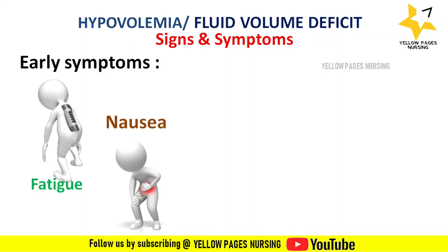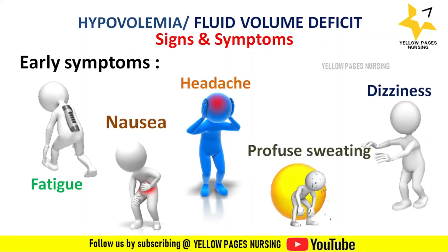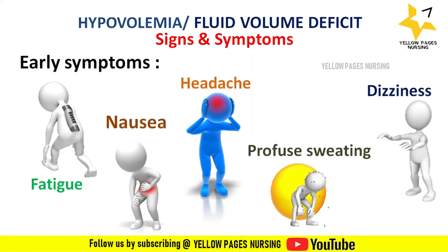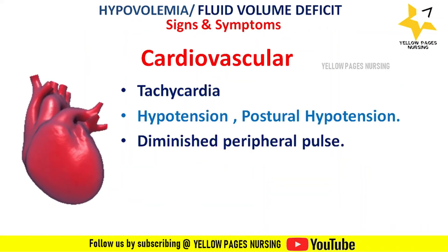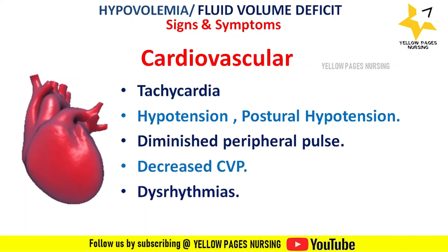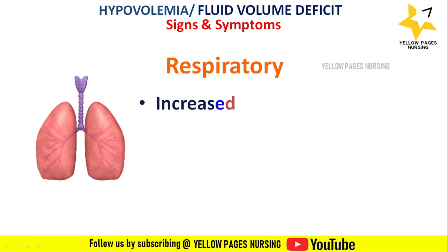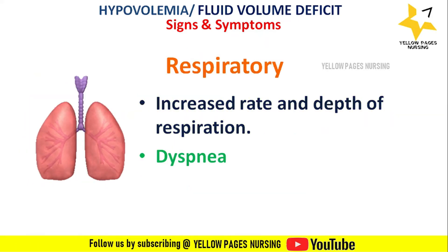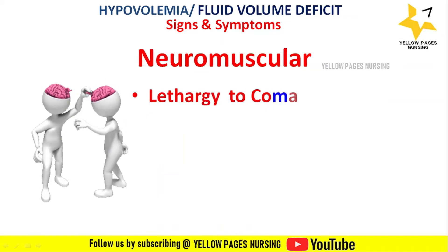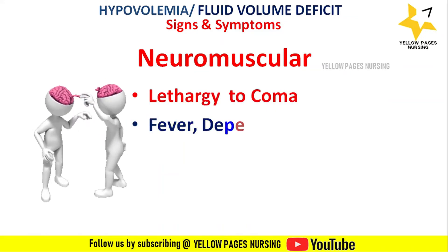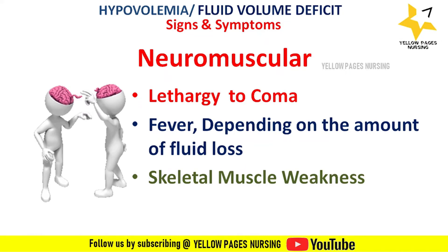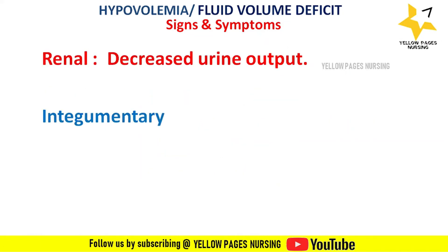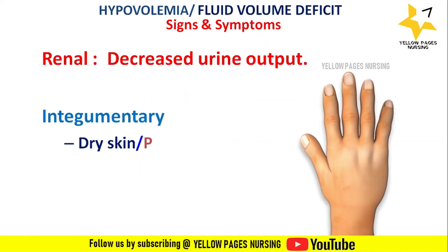Signs and symptoms of fluid volume deficit: early symptoms include fatigue, nausea, headache, profuse sweating, and dizziness. Cardiovascular symptoms include tachycardia, hypotension, postural hypotension, diminished peripheral pulse, decreased central venous pressure, and dysrhythmias. Respiratory symptoms include increased rate and depth of respiration and dyspnea. Neuromuscular symptoms include lethargy to coma, fever, and skeletal muscle weakness. Renal symptoms include decreased urine output; integumentary symptoms include dry or pale skin.